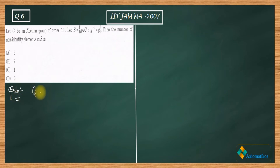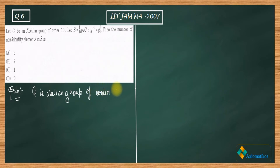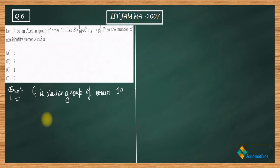G is an abelian group of order 10, and S is a set which consists of all the self-inverse elements from G. The question is asking us about the non-identity elements inside the given set S. Before proceeding with the solution, I will show you an important result regarding this question.